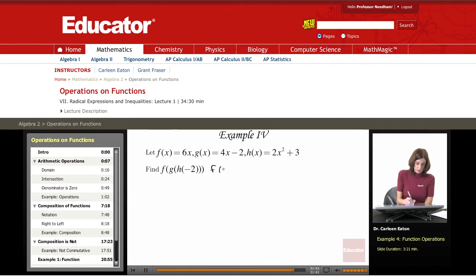Okay, so I'm going to start out by looking for h of negative two. So let's go ahead and find that value. So I want to find f of g of h of negative two. So what is h of negative two? Well, h is 2x squared plus 3. Therefore, h of negative two, I would have to substitute in - I'd put a negative two here and square it plus three.